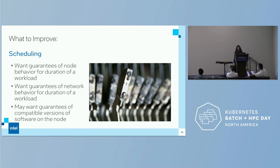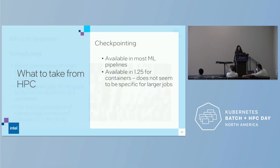What do we want from scheduling that we don't have today? We want guarantees of node behavior for the duration of a workload — that's from HPC. We want guarantees of network behavior for the duration of the workload, and guarantees of compatible versions of software on the node, including BIOS settings and Ethernet settings. From HPC we also have checkpointing — we don't want to get rid of that. It's available for most ML pipelines but not default. There's now a new checkpointing mechanism for containers that looks promising.